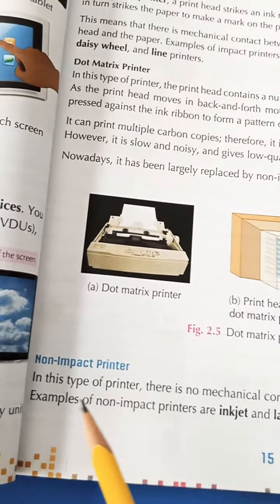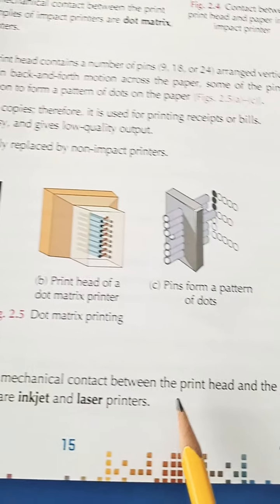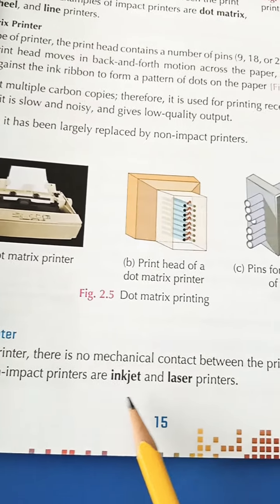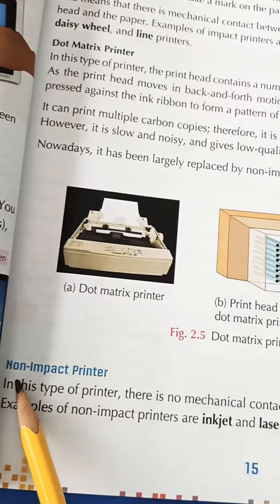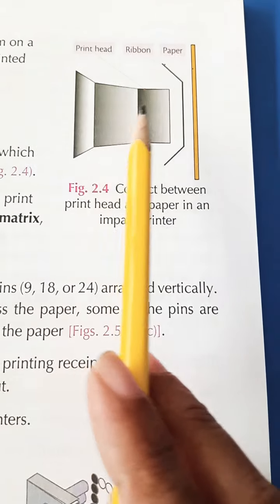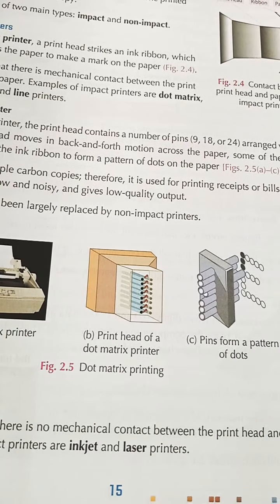Next is the non-impact printer. In this type of printer, there is no mechanical contact between the print head and the paper. Examples of non-impact printers are inkjet and laser printers. Nowadays, we use laser printers. This is an example of non-impact printer. In this type of printer, there is no mechanical contact. First, we have a print head, ink ribbon, paper. This is not the contact. Turn the page.